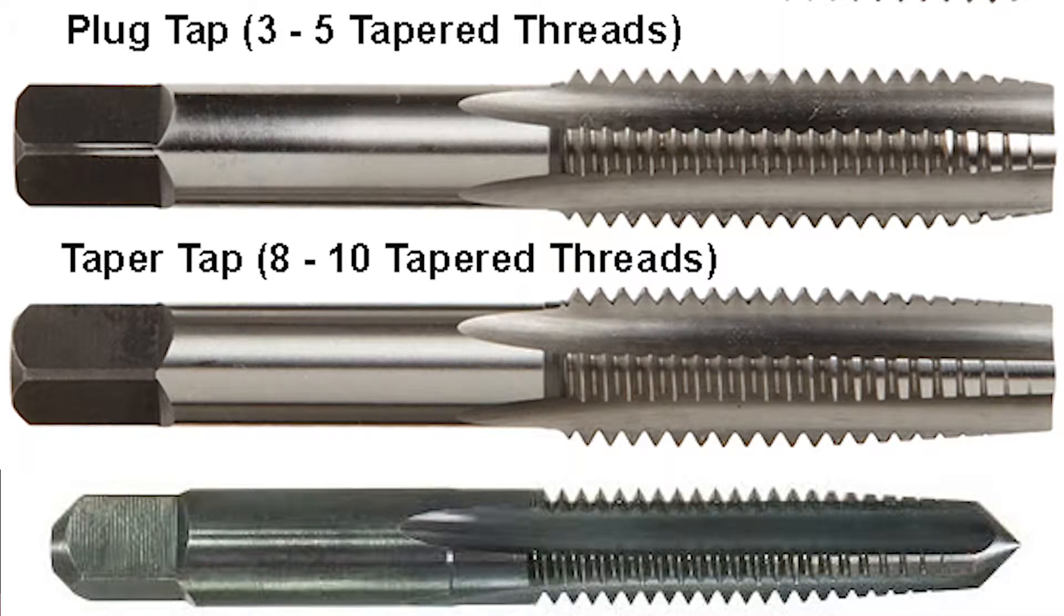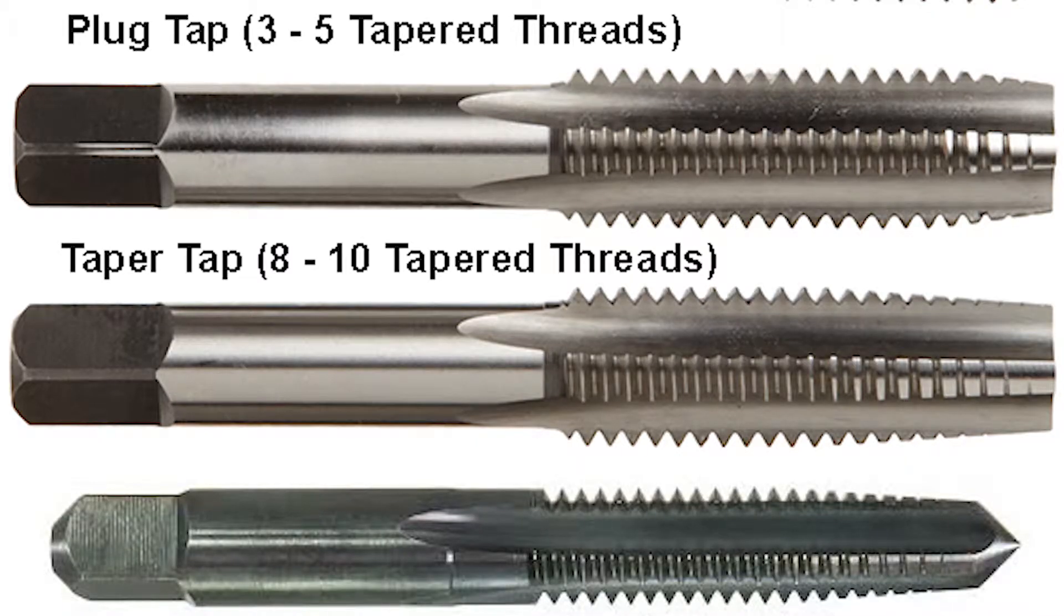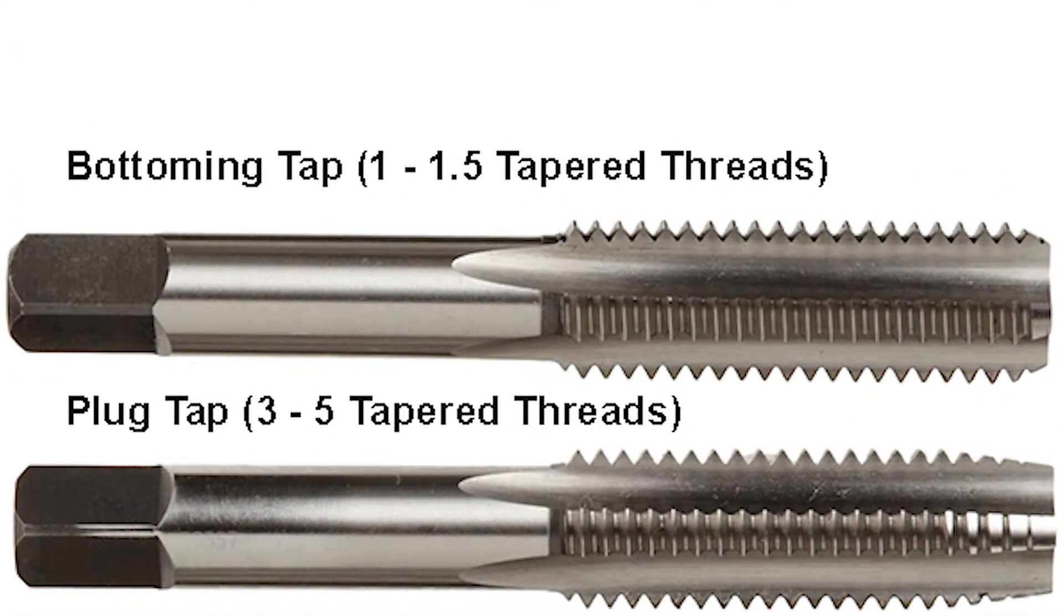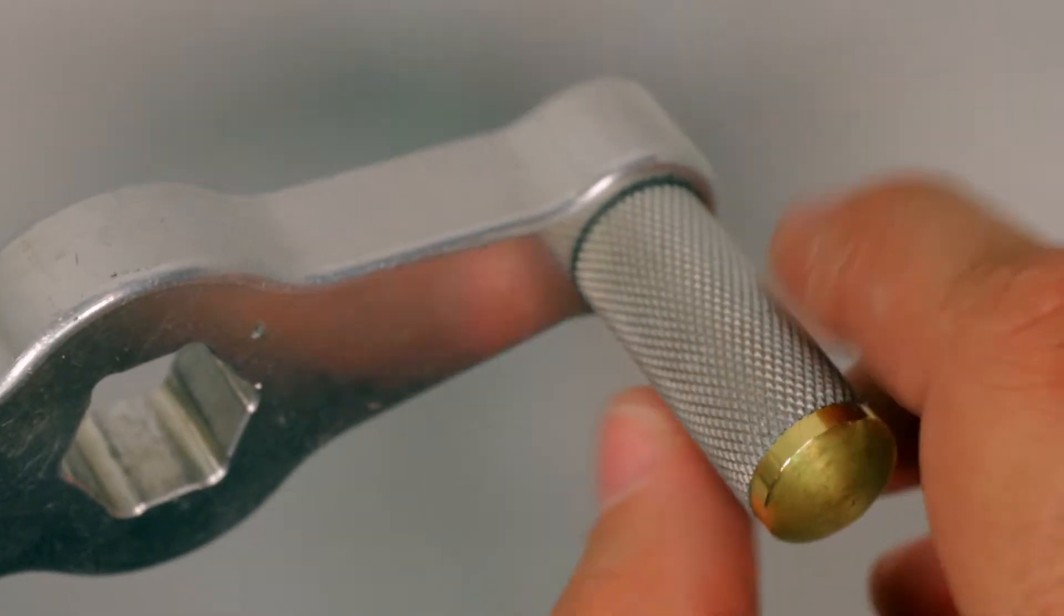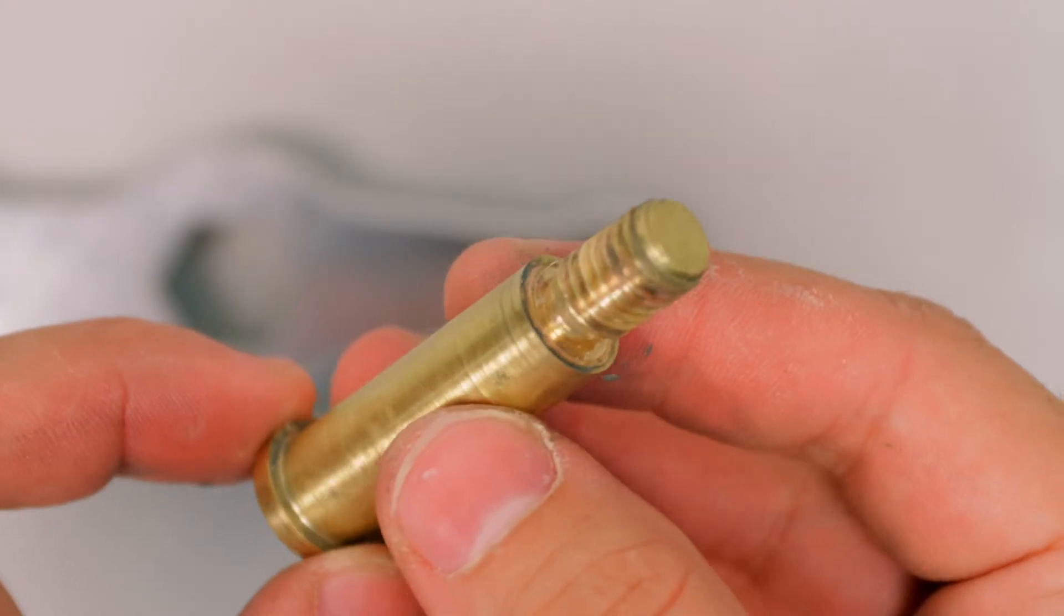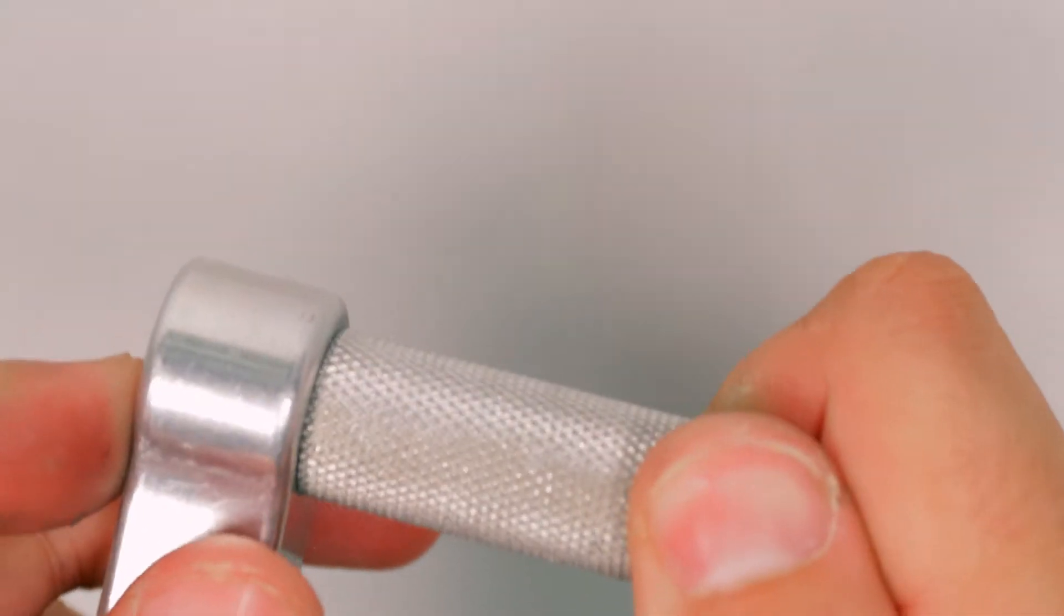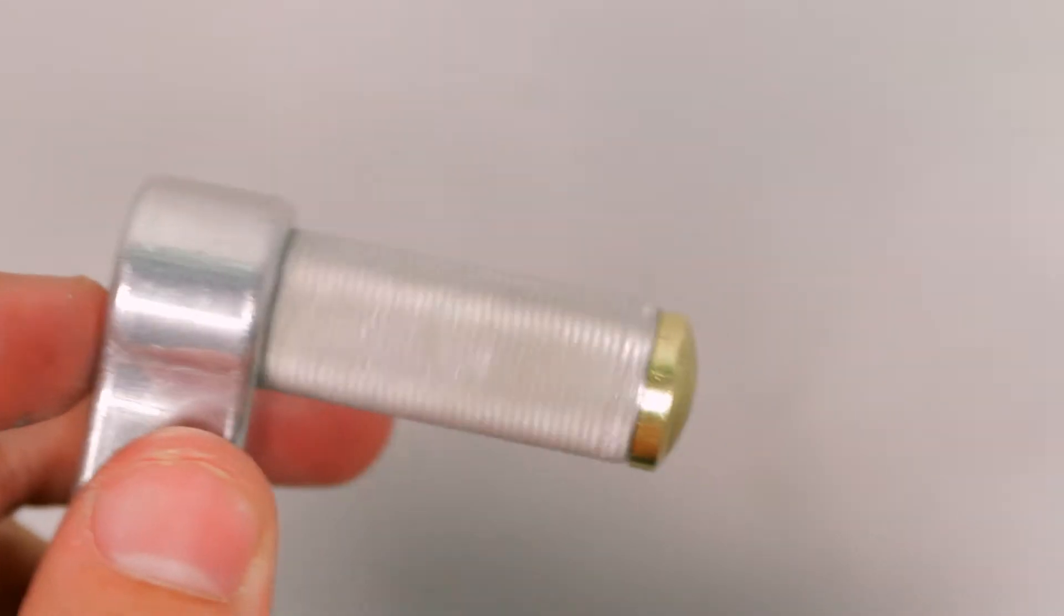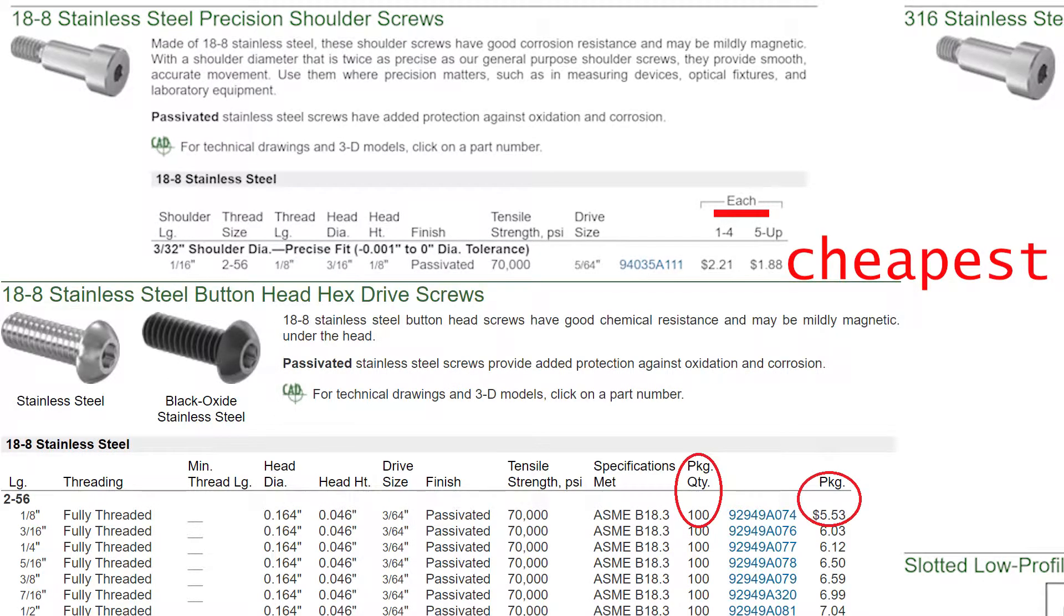Taps usually have a few tapered threads to help them get started, but this means that a screw wouldn't be able to go to the bottom of a hole. After tapping the hole, if you then switch to a bottoming tap, you could then get those last few threads. I wouldn't have to worry about tap depth at all if I had screws with a shoulder. I looked up shoulder screws on McMaster, and I would have got them, but they're crazy expensive, so maybe I'll just make them myself in the future or something.